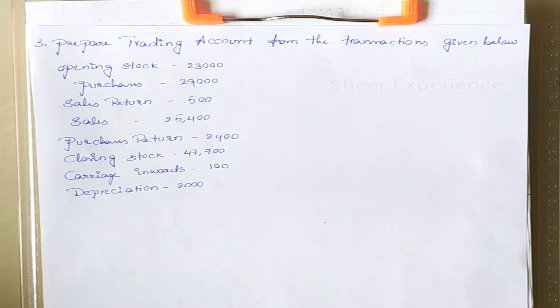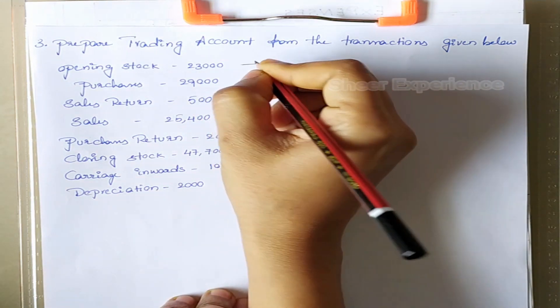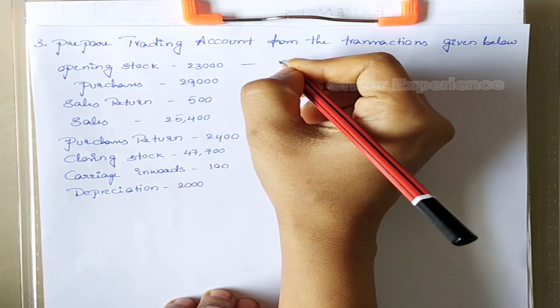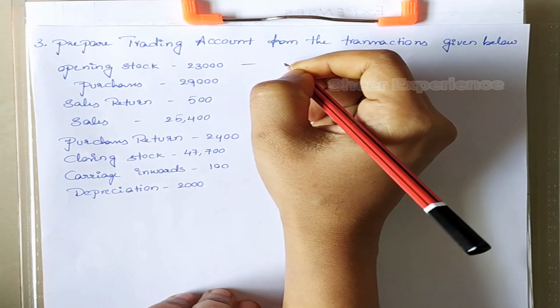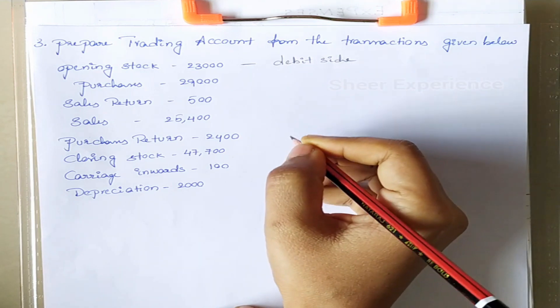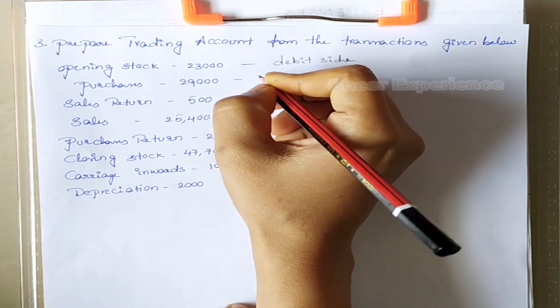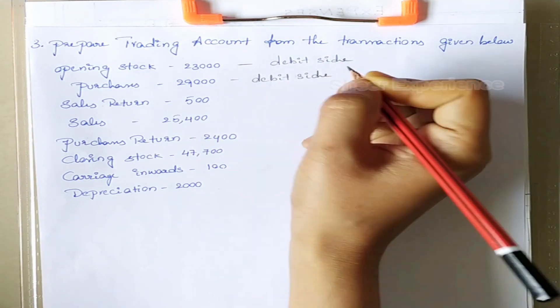First let's find out which item should be debited and which item should be credited. Our first account is opening stock. In a trading account we put opening stock on the debit side as per the format. Next, purchases is also mentioned on the debit side.